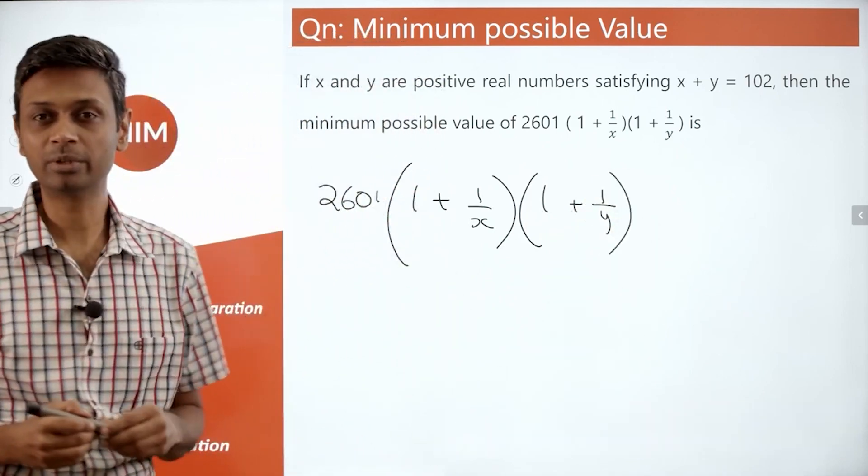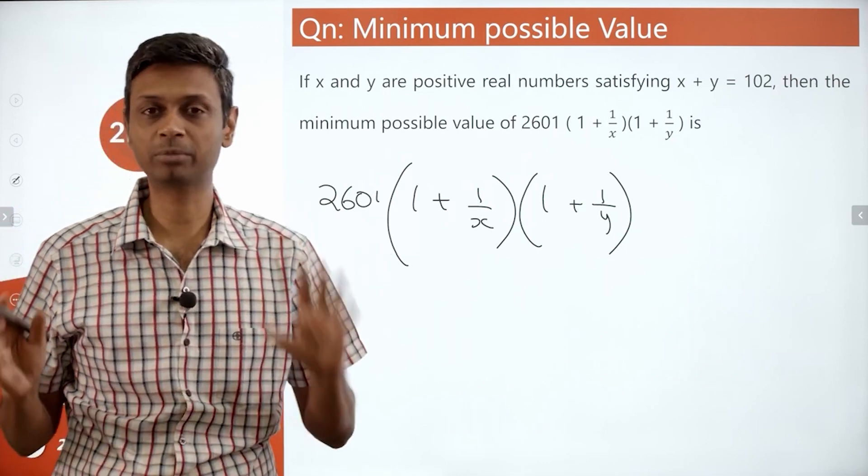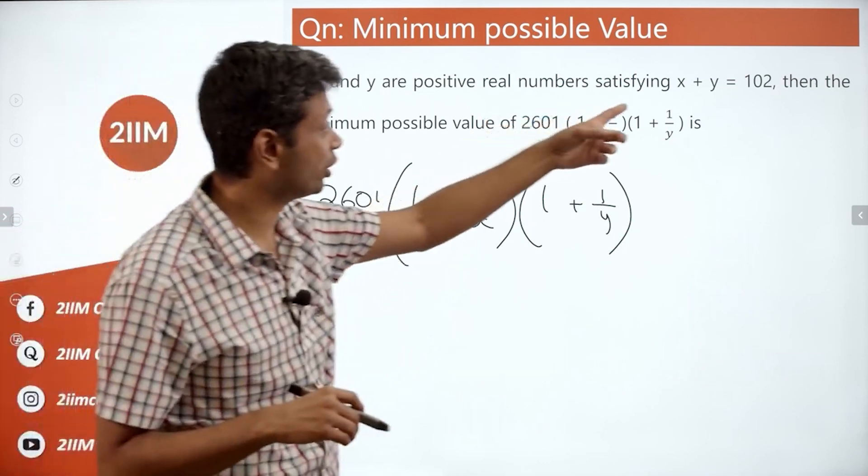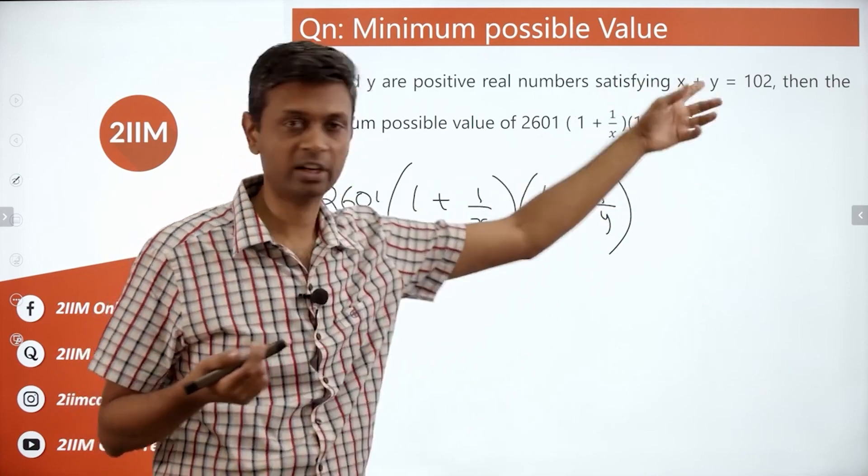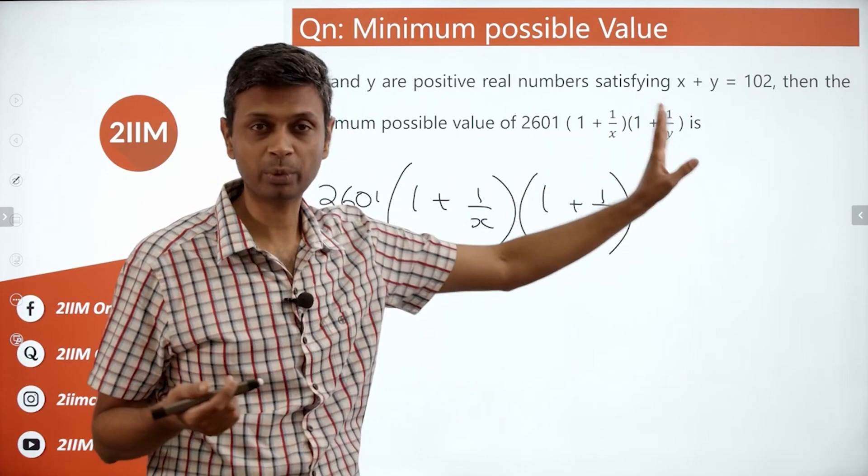We're talking about positive real numbers, and the best way to go about it is pick two extremes. Put x is 0.1, y is 101.9, or x is 1, y is 101. Another extreme: put x is 51, y is 51.